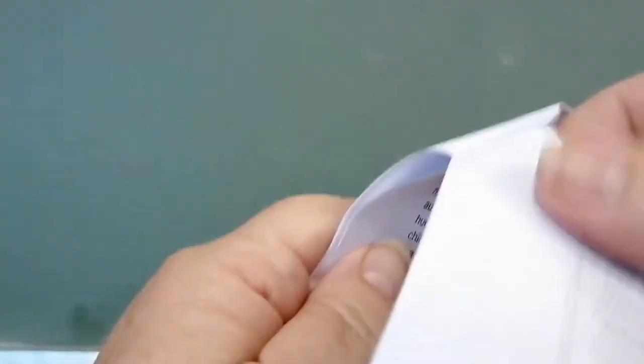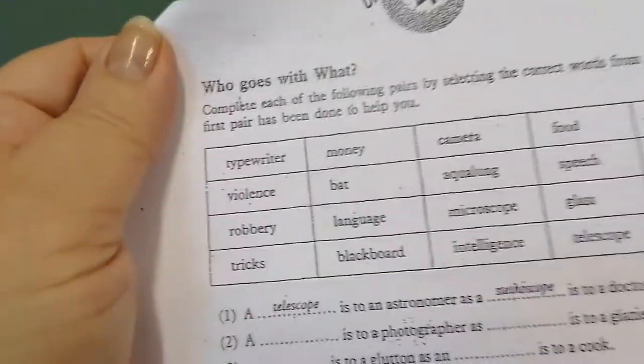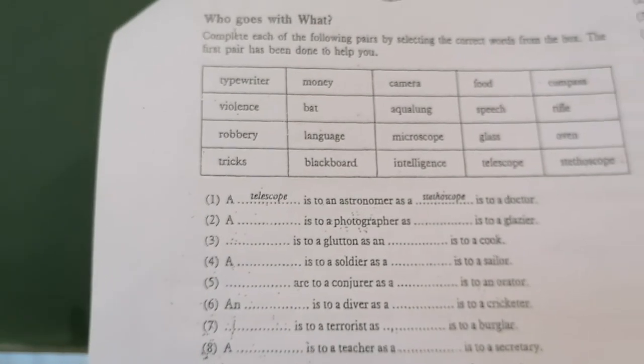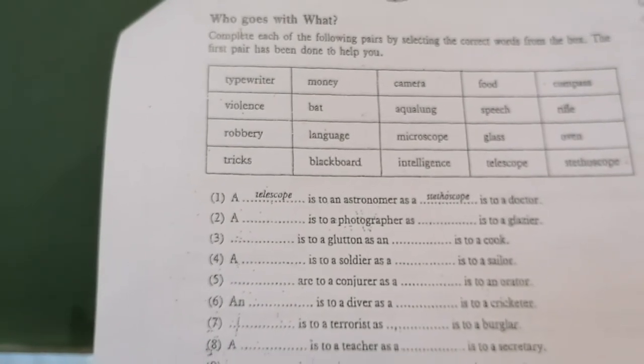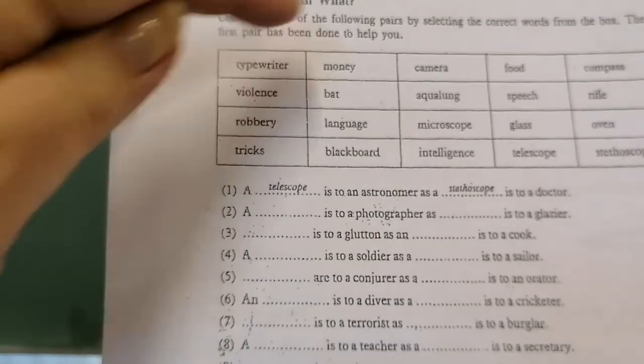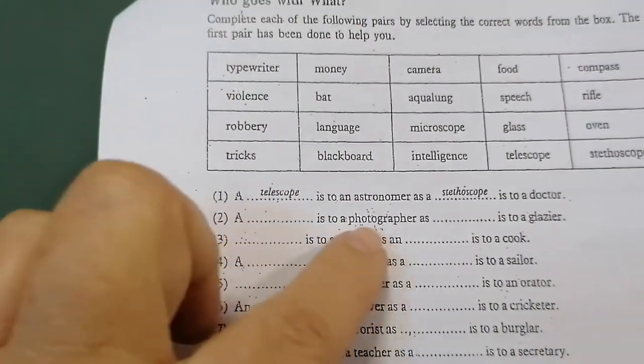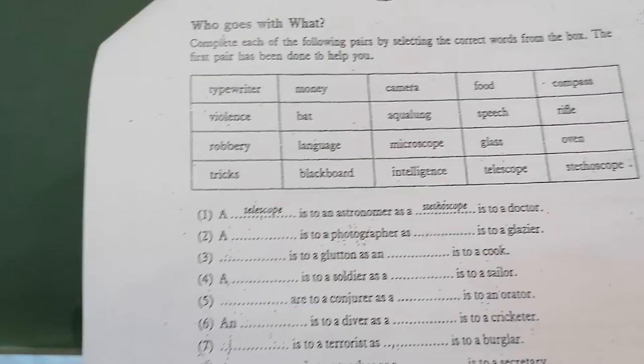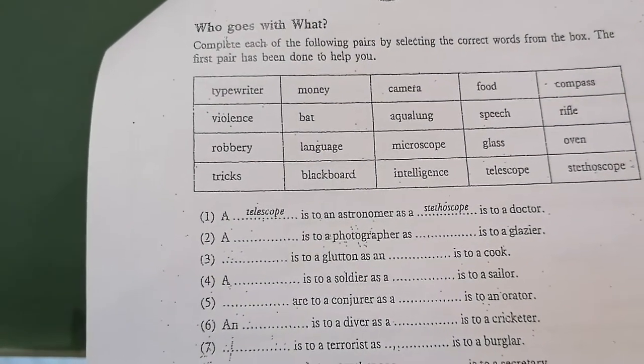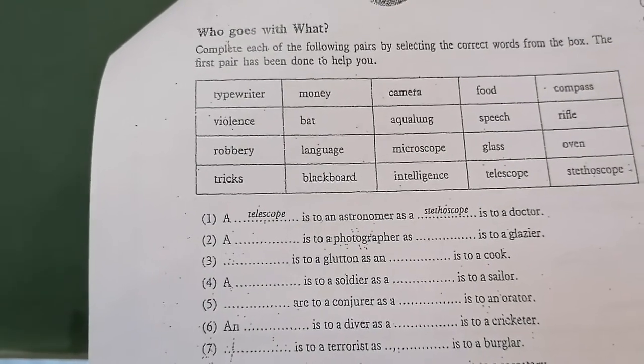I love this one. This is without a doubt one of my favourite ones in the whole pack. In Unit 4, where it tells you a telescope is to an astronaut, as a stethoscope is to a doctor. So there we go. Now you use the words here to see what is to a photographer, obviously a camera, as is to a glazier. So now you're going to have to Google what is glazier, and then you'll be able to fill those in.